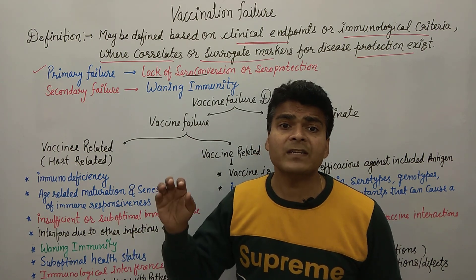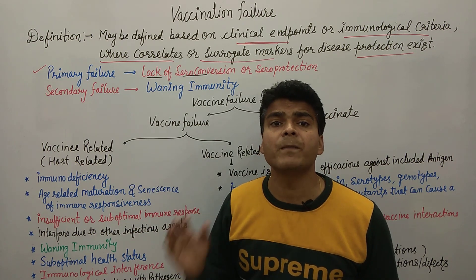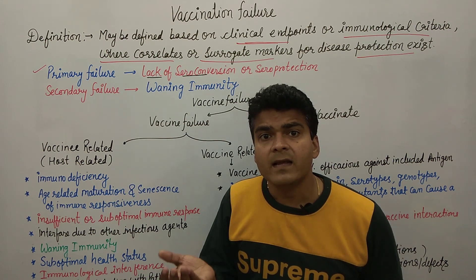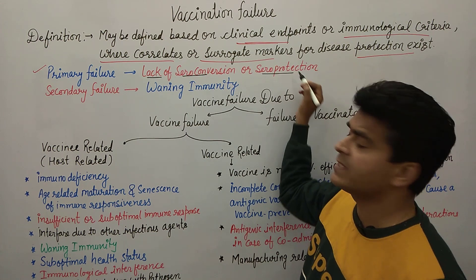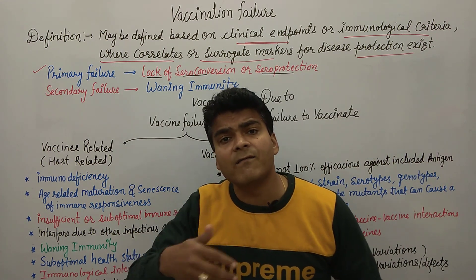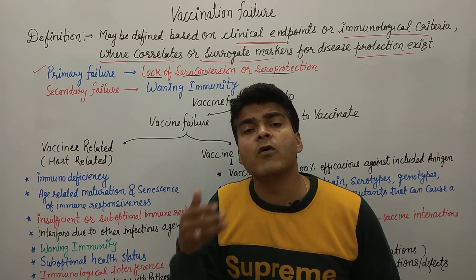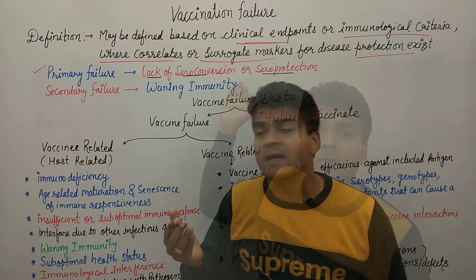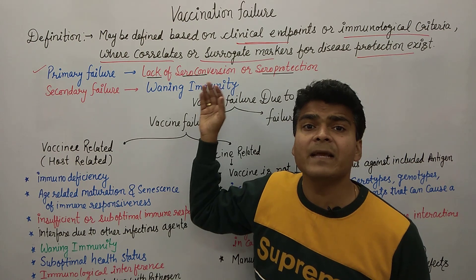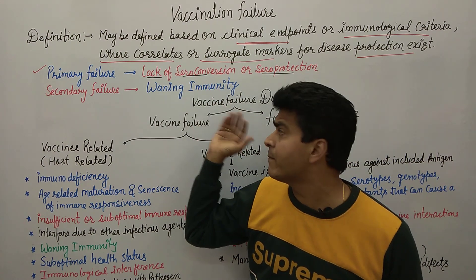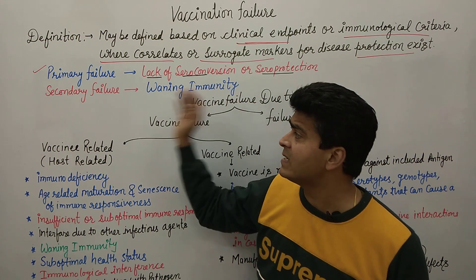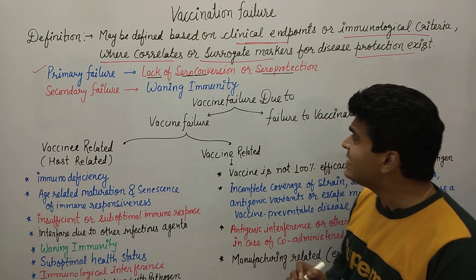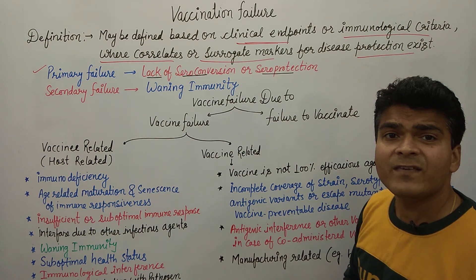This is lack of seroconversion or zero protection — even after exposure to the disease, even after coming into contact with the disease, such as in the case of healthcare workers, antibodies still do not develop after encountering the antigen. This is the lack of seroconversion. Secondary failure is waning immunity, meaning immunity is decreasing.